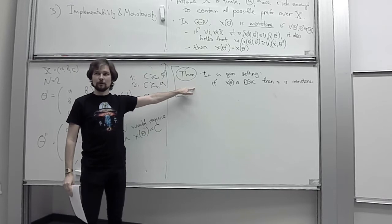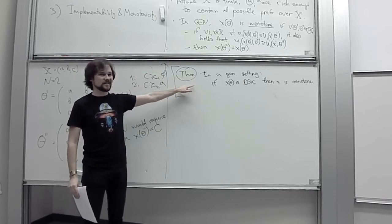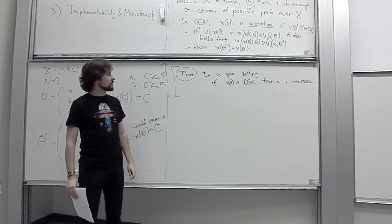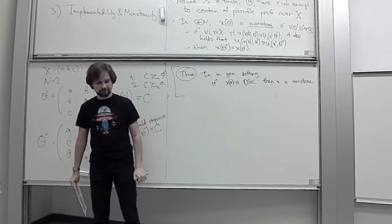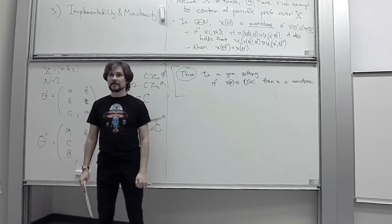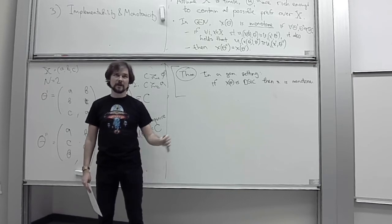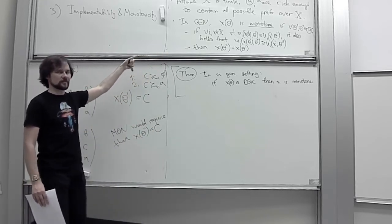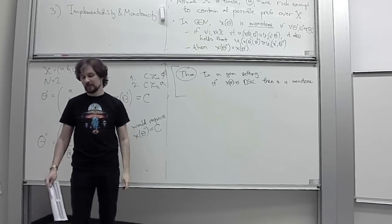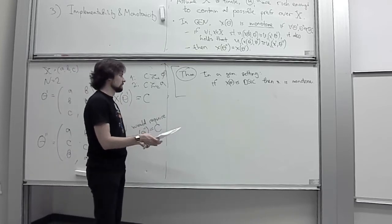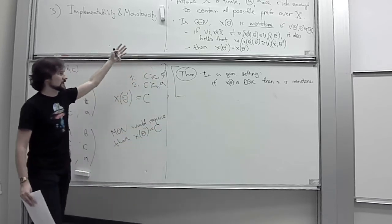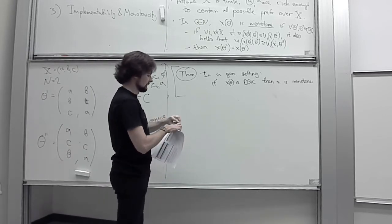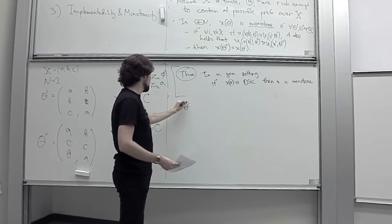This is no longer an if-and-only-if result. Monotonicity is necessary for implementability, but not sufficient. This is the mirror of what we had before. As it turns out, in the general setting we can make a few extra steps, because this monotonicity ends up being stronger than the other forms of monotonicity from different settings.